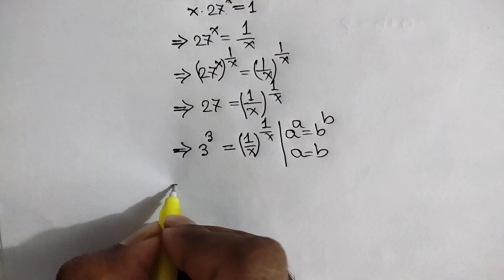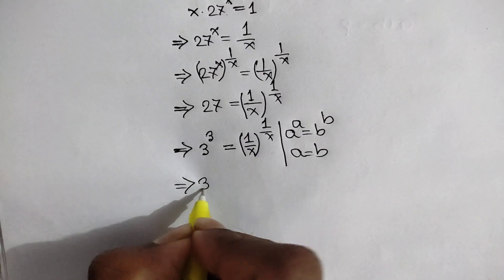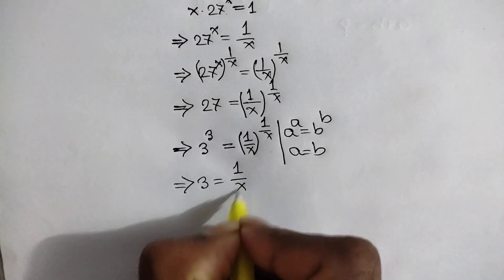Applying this rule here, we can write 3 is equal to 1 over x.